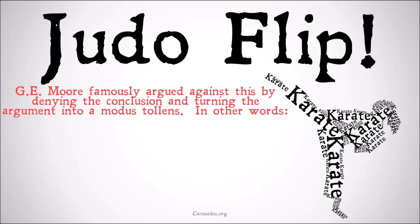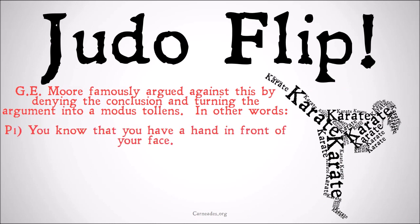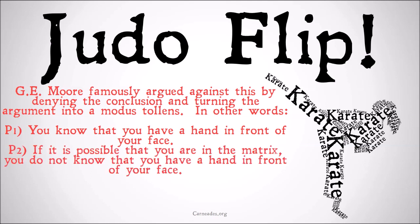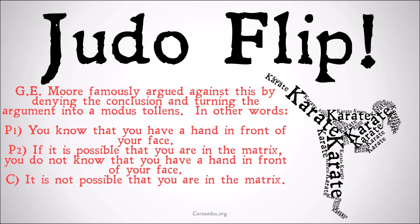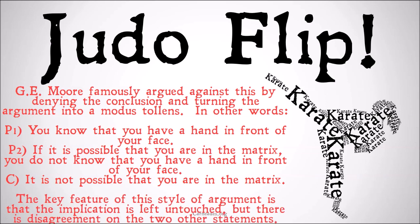G.E. Moore famously argued against this by denying the conclusion and turning the argument into a modus tollens. In other words: you know that you have a hand in front of your face. If it's possible you're in the matrix, you do not know you have a hand in front of your face. Therefore, it is not possible that you are in the matrix. The key feature of this style of argument is that the implication is left untouched, but there is disagreement on the other two statements — you deny the conclusion and run the argument backwards to deny the initial first premise.